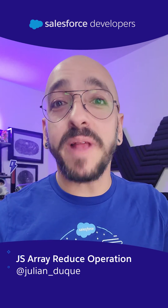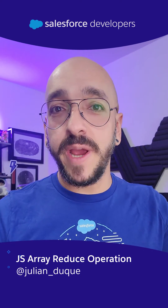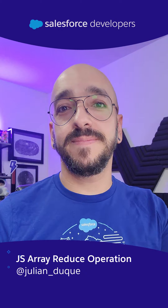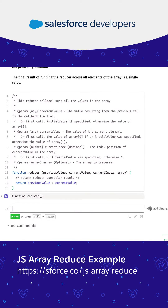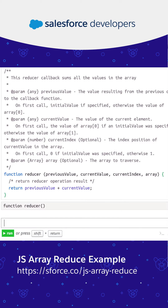Let's learn how to do a JavaScript Array Reduce operation in one minute or less. A reduce operation executes a reducer callback function on each element of the array in order, passing in the return value from the calculation on the preceding element. The final result of running the reducer across all the elements of the array is just a single value.